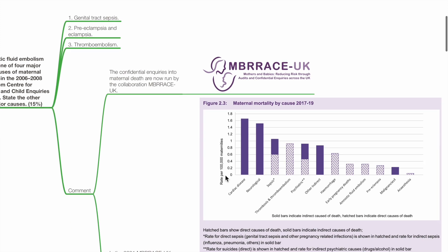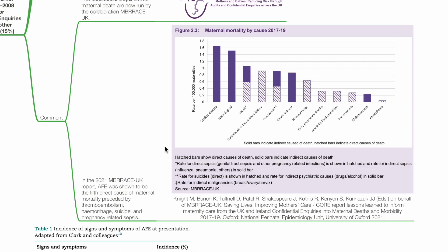Comments: The confidential enquiries into maternal death are now run by the collaboration MBRRACE-UK. In the 2021 MBRRACE-UK report, AFE was shown to be the fifth direct cause of maternal mortality, preceded by thromboembolism, haemorrhage, suicide and pregnancy-related sepsis.